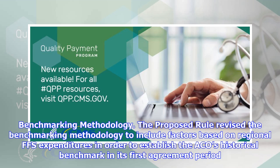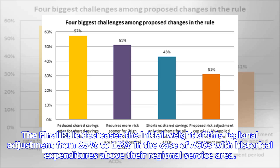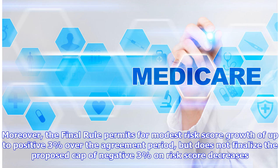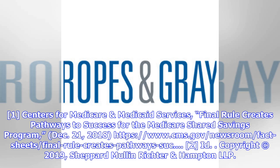Benchmarking methodology: the proposed rule revised the benchmarking methodology to include factors based on regional FFS expenditures in order to establish the ACO's historical benchmark in its first agreement period. The final rule decreases the initial weight of this regional adjustment from 25 percent to 15 percent for ACOs with historical expenditures above their regional service area. The final rule also permits modest risk score growth of up to positive three percent over the agreement period, but does not finalize the proposed cap of negative three percent on risk score decreases.